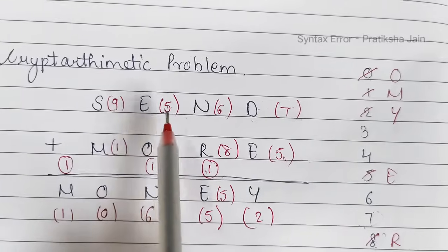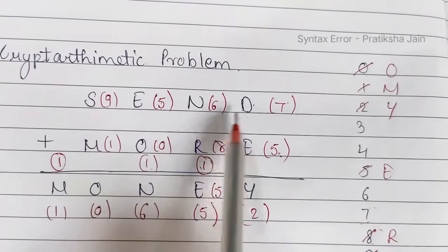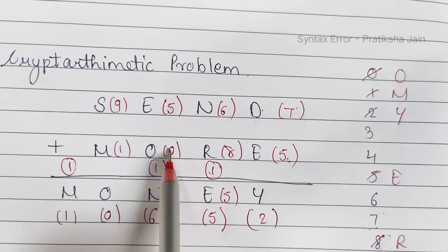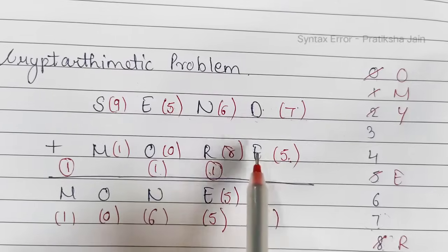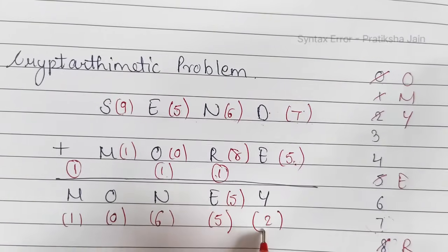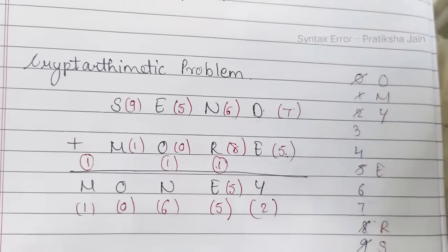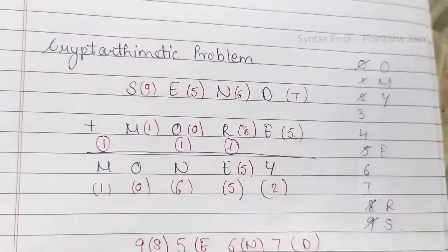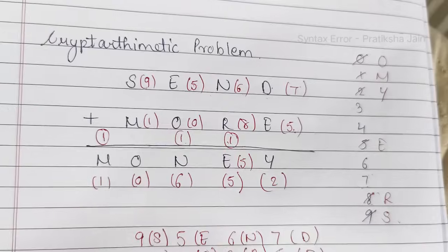Wherein S is 9, E is 5, N is 6, D is 7, M is 1, O is 0, R is 8, E is 5, and Y is 2. Thank you for watching the video. I hope the solution will help you solve different problems of cryptarithmetic too. Thank you.